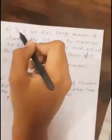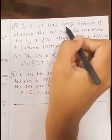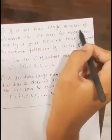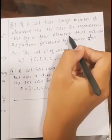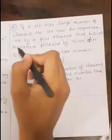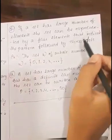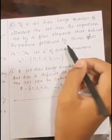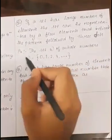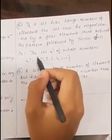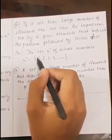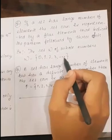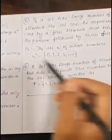If a set has large number of elements, the set can be represented by a few elements that indicate the pattern followed by three dots. For example, the set of whole numbers is written as W = {0, 1, 2, 3, ...}. All those are infinity whole numbers.